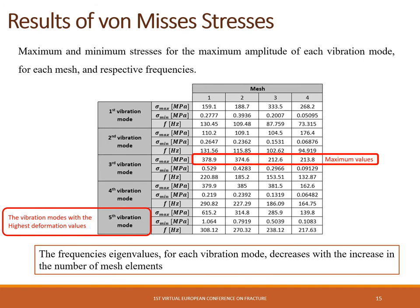This table presents the maximum and minimum stress for the maximum amplitude of each vibration mode for each mesh, and the respective frequency eigenvalues for each vibration mode. The frequency eigenvalues decrease with the increase in the number of mesh elements. In the third vibration mode, the maximum values of stresses are present.